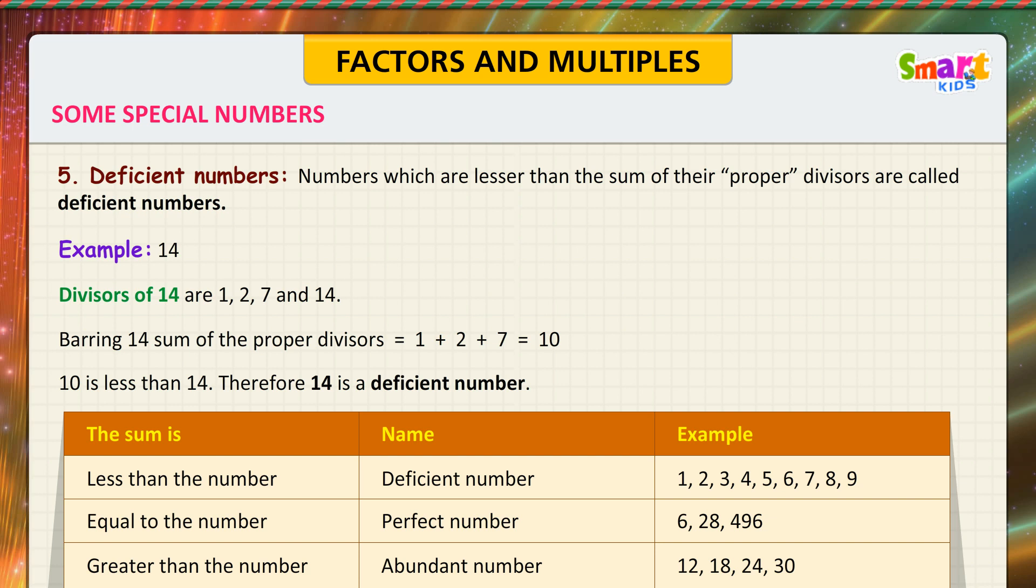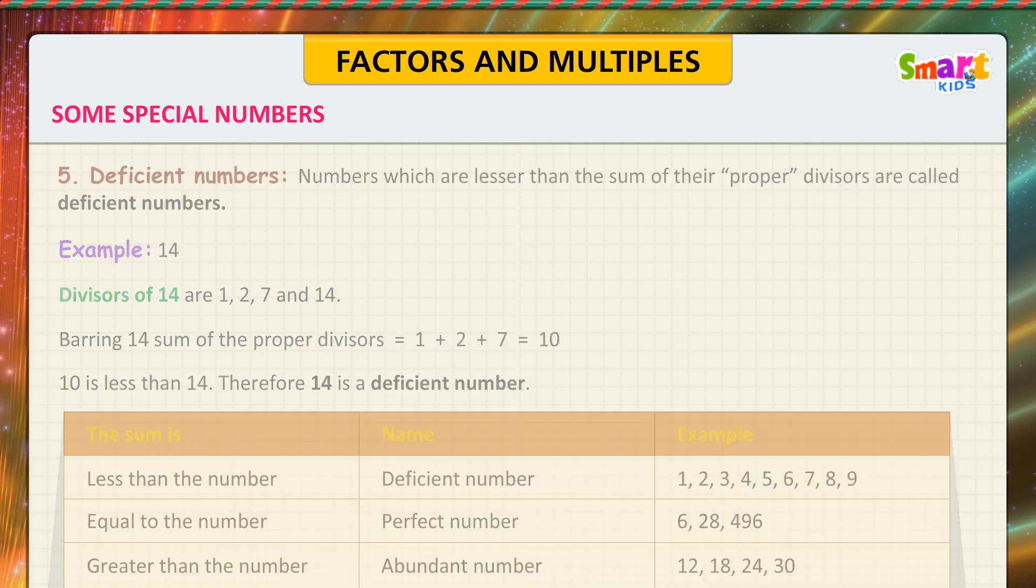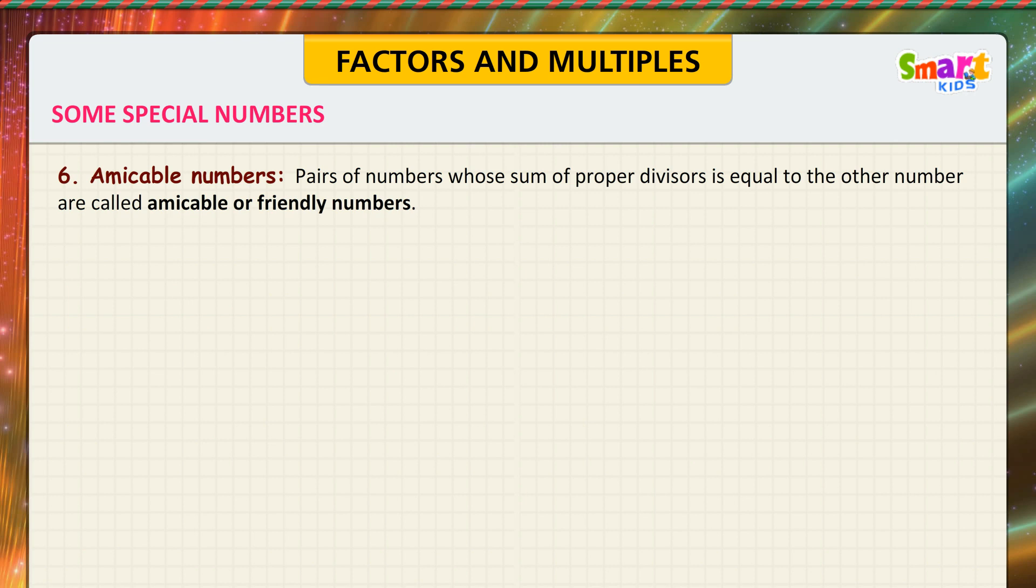Amicable numbers: Pairs of numbers whose sum of proper divisors is equal to the other number are called amicable or friendly numbers. See the example. 220 and 284 are a pair of amicable numbers.